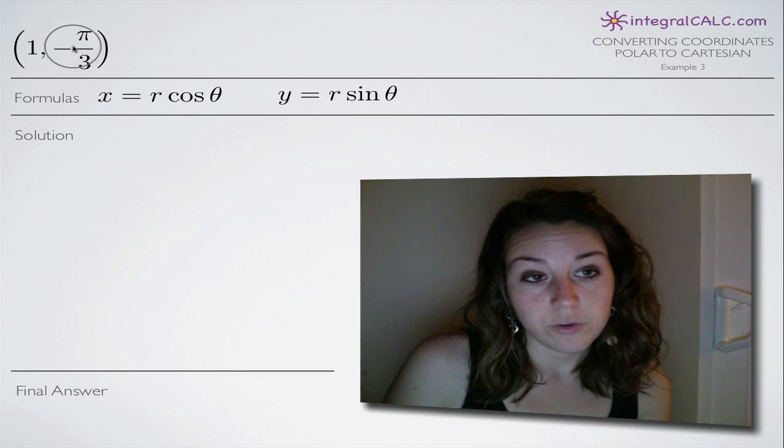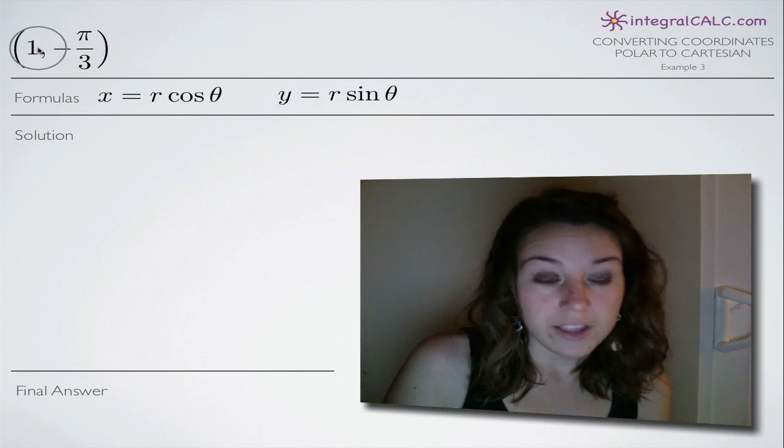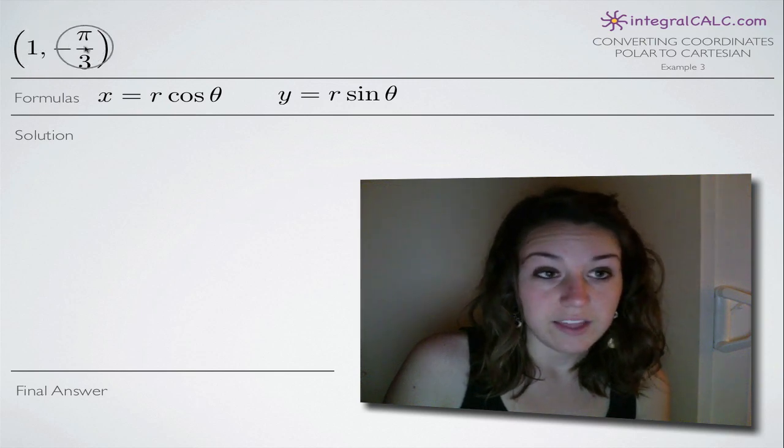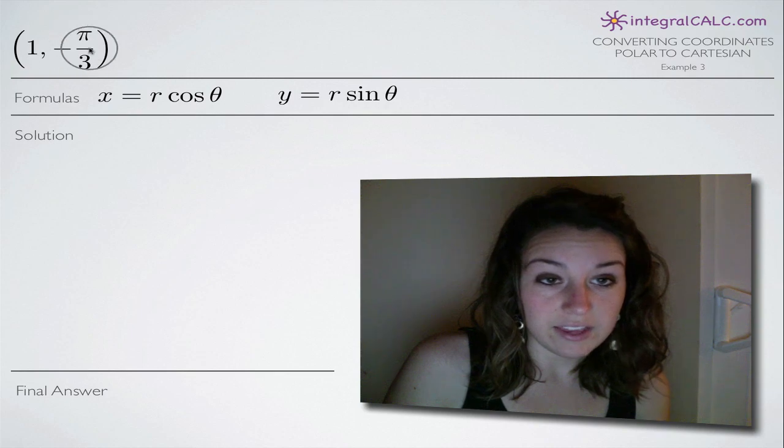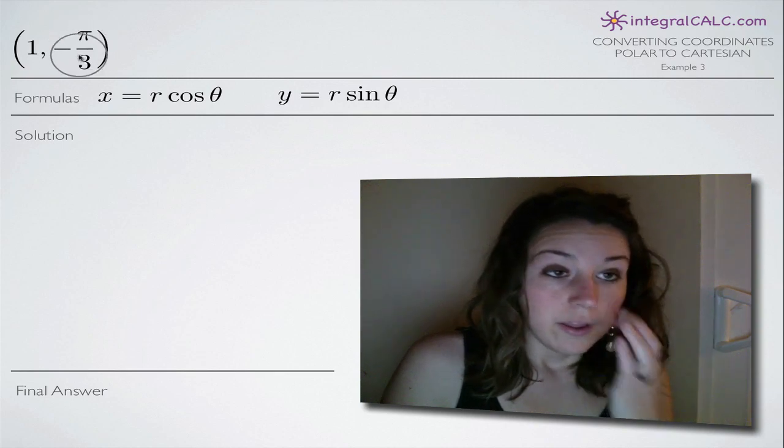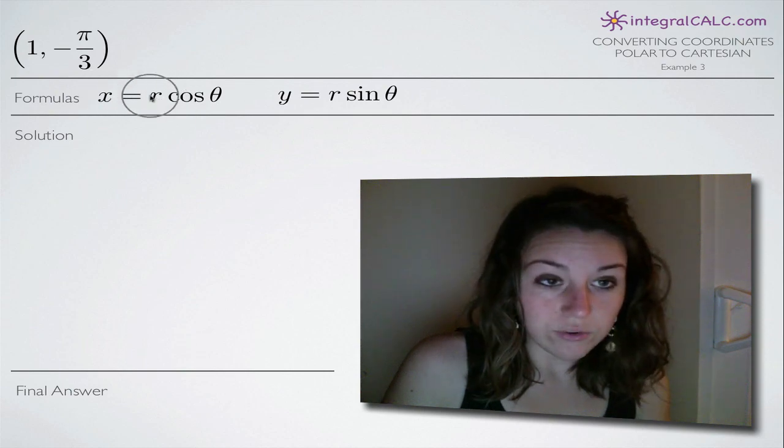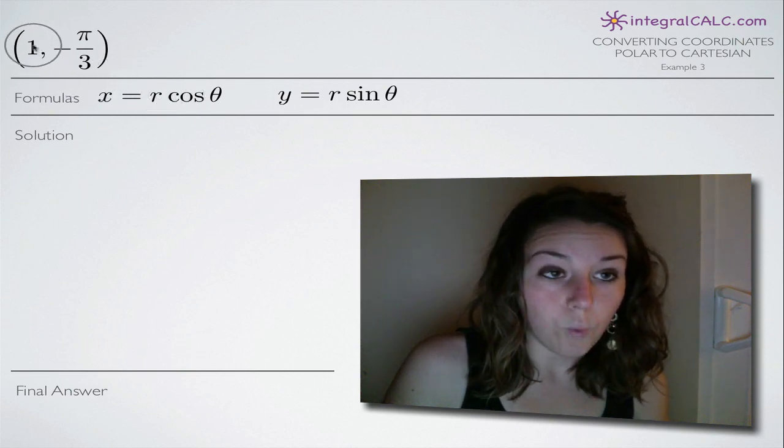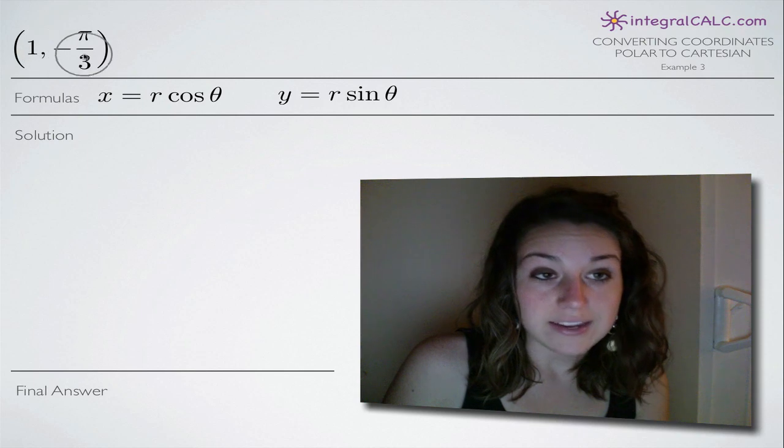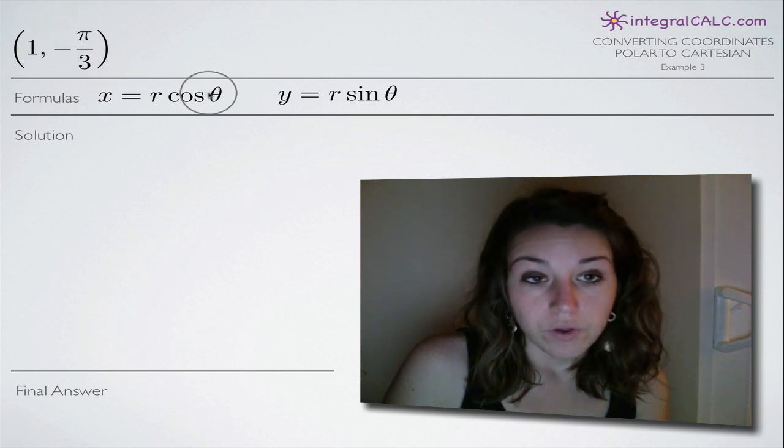In other words, r is the radius and theta is the angle. So we have r, theta, and that means that when we use these two formulas, we're going to be plugging in 1 for r and negative pi over 3 for theta.